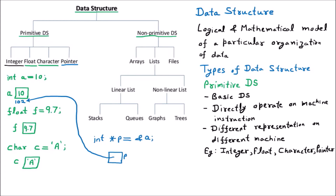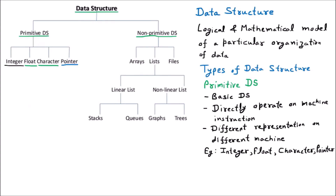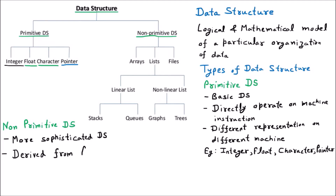Now we are moving to the non-primitive data structure. Non-primitive data structures are more sophisticated — meaning they are designed for some specific task and they are derived from the primitive. Using primitive types we are going to create the non-primitive. They specify some specific task, they have some set of rules, and they are derived from primitive data structures — using integer, float, character, and pointer to declare different data structures.